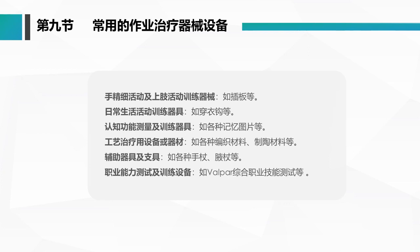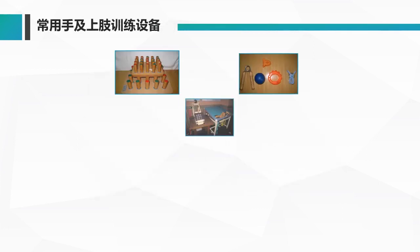第九节，常用的作业治疗器械设备。主要包括：第一，手精细活动和上肢活动训练的器械，如插板等；第二，日常生活活动训练的器具，如穿衣钩、跳棋等；第三，认知功能测量及训练器具，如各种记忆图片和卡片等；第四，文娱治疗用设备和器材，如编织材料、制陶材料等；另外还有辅助器具，如手杖、腋杖等；以及职业能力测试训练设备，如综合职业技能测试软件VALPAR等。